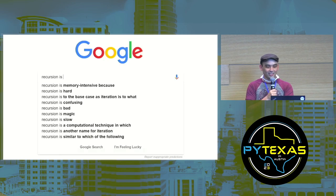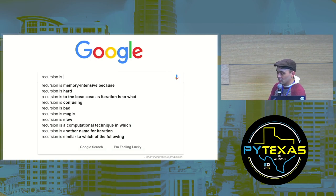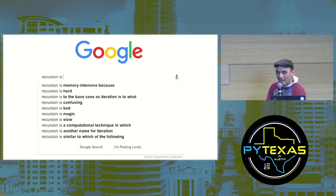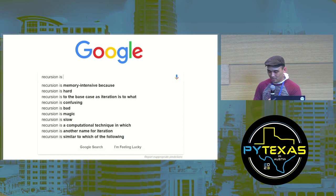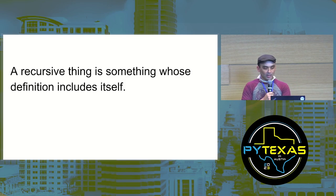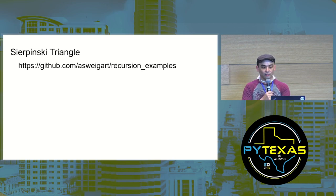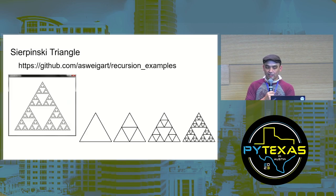So what is recursion? Let's ask that website that knows all of our private thoughts. According to those suggestions, recursion is hard, confusing, magic, and bad. Alright, so let's start with a basic definition: a recursive thing is something whose definition includes itself.